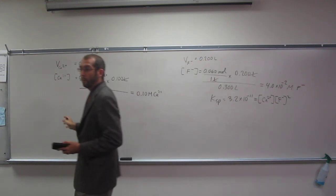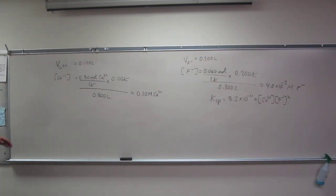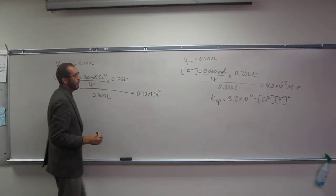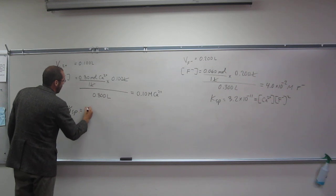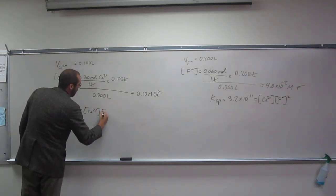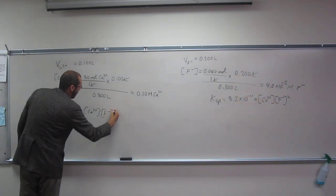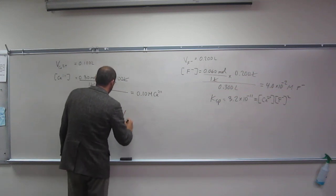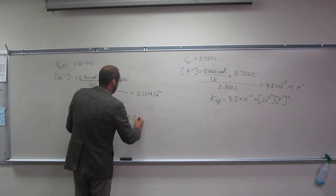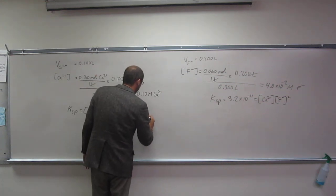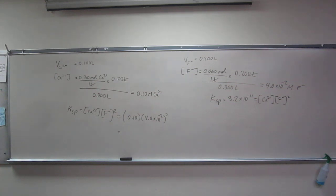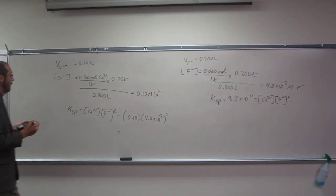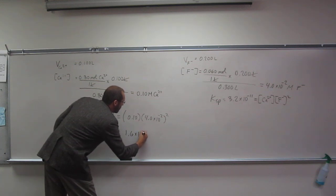Has everybody gotten that far? Does it make sense? Now remember the Ksp expression. So Ksp equals 0.10 times 4.0 times 10 to the negative 2 squared, which equals 1.6 times 10 to the negative 4.